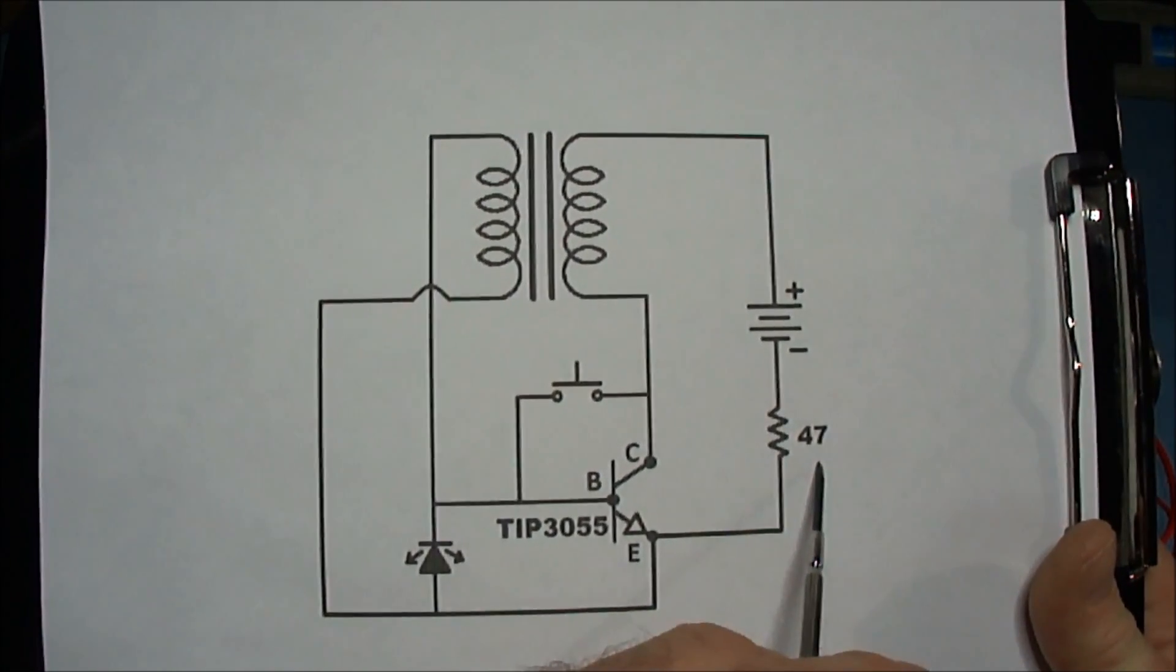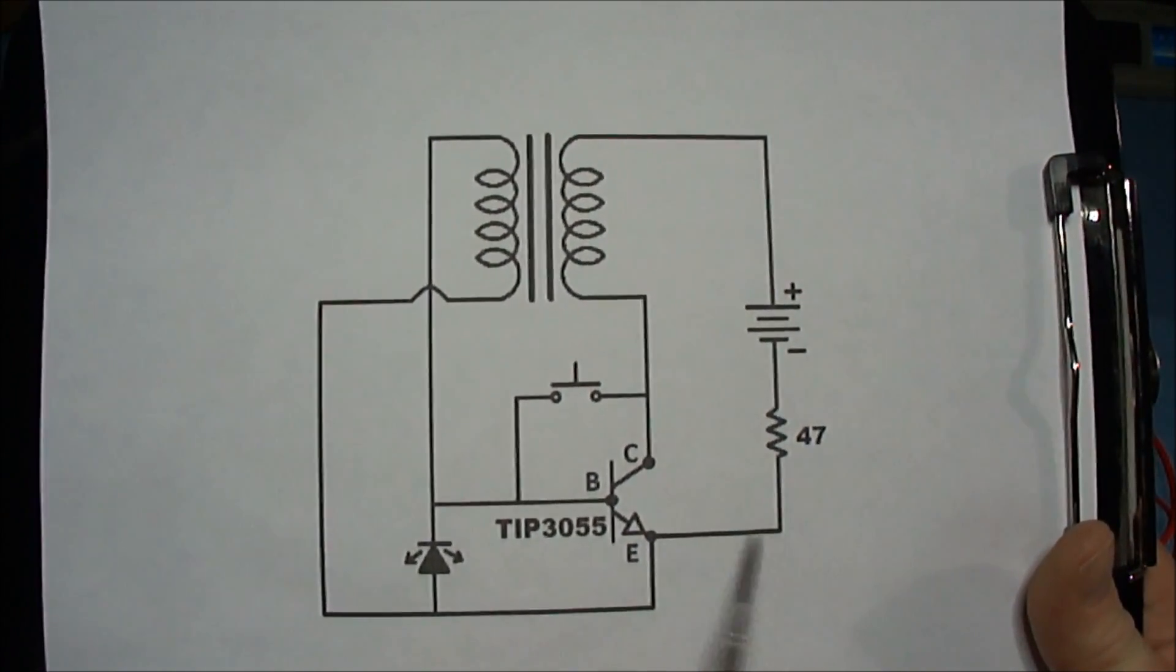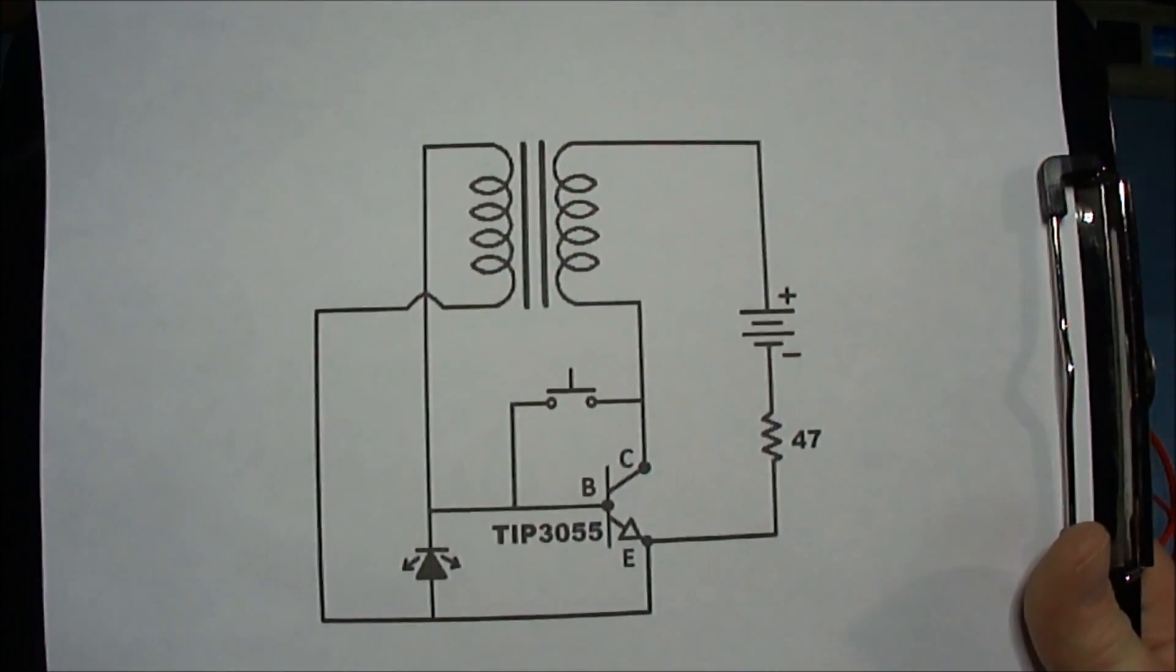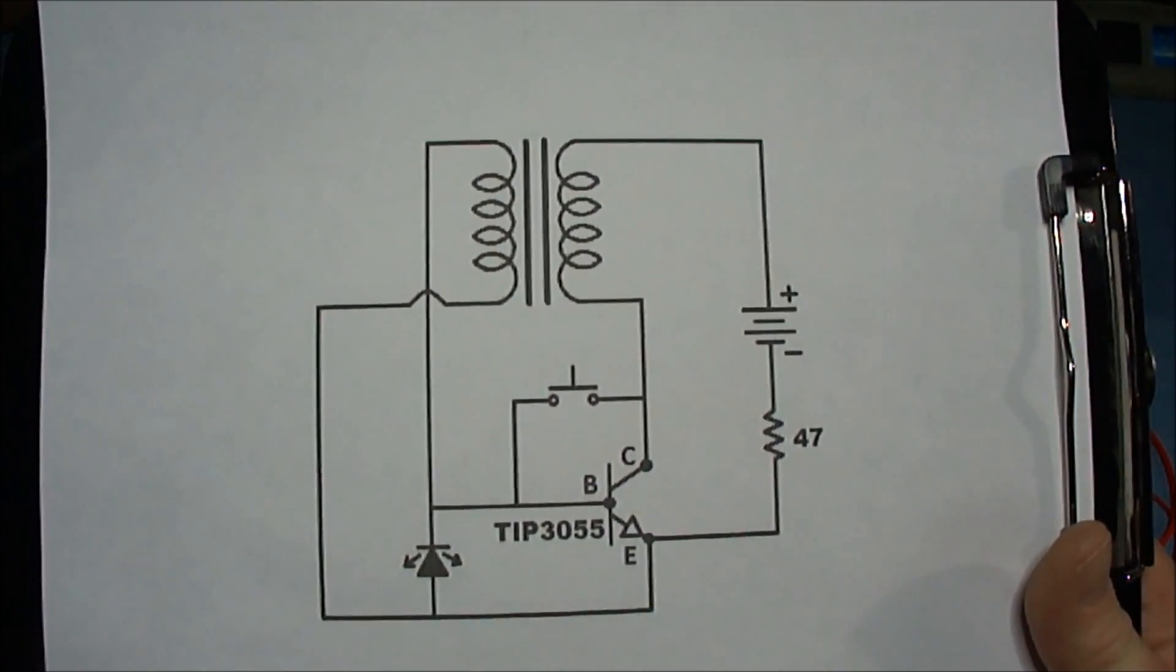I need to limit the current going in here. I have a 47 ohm resistor here. Because if I let the full current go through, the frequency goes too high and the oscillation stops. It shuts down.